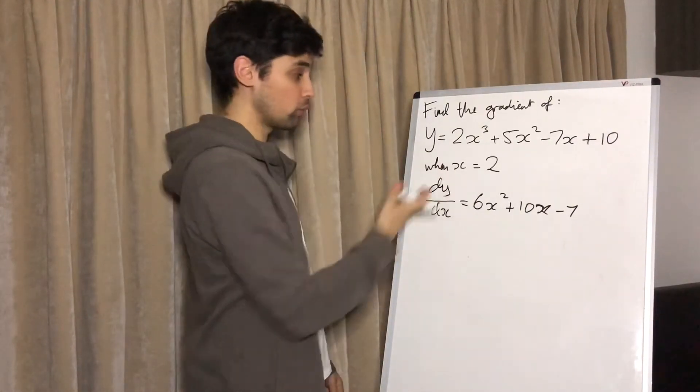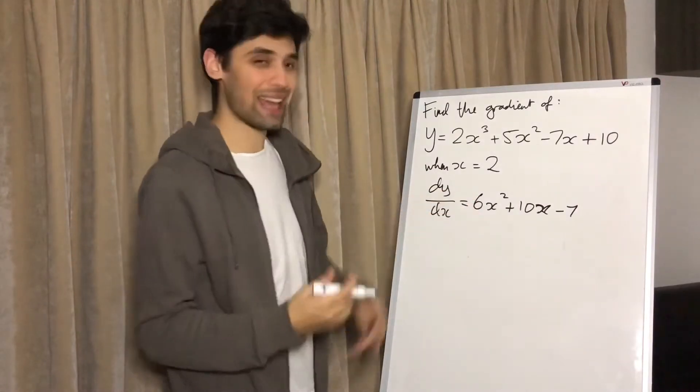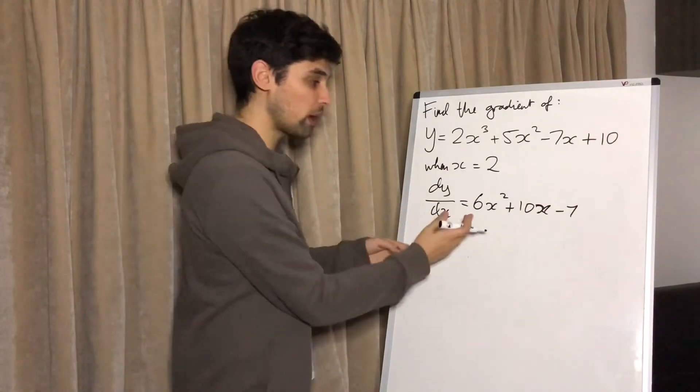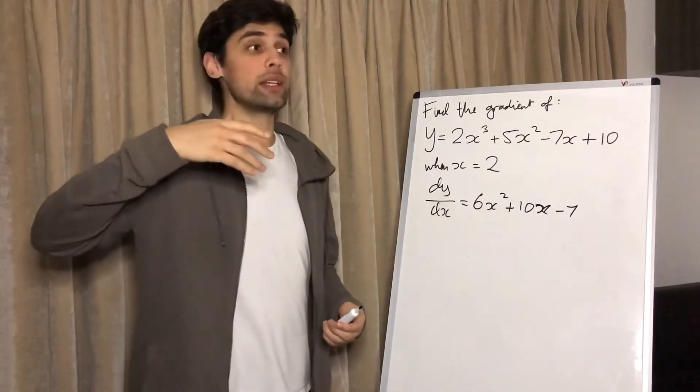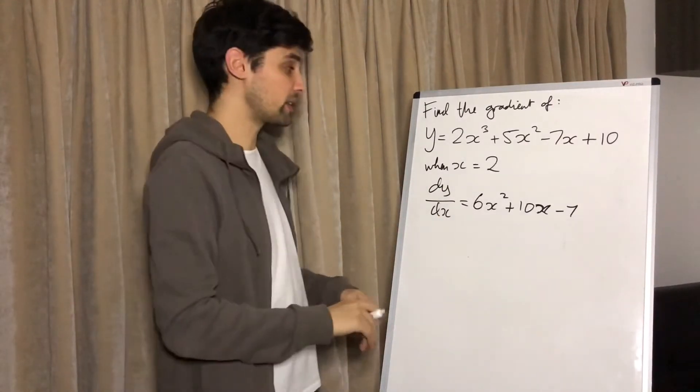So in the question, we want to know what the gradient is when x equals 2, so we plug in x equals 2. If you want to know the gradient when x equals 5, we plug in 5. If the gradient when x is minus 7, we plug in minus 7.